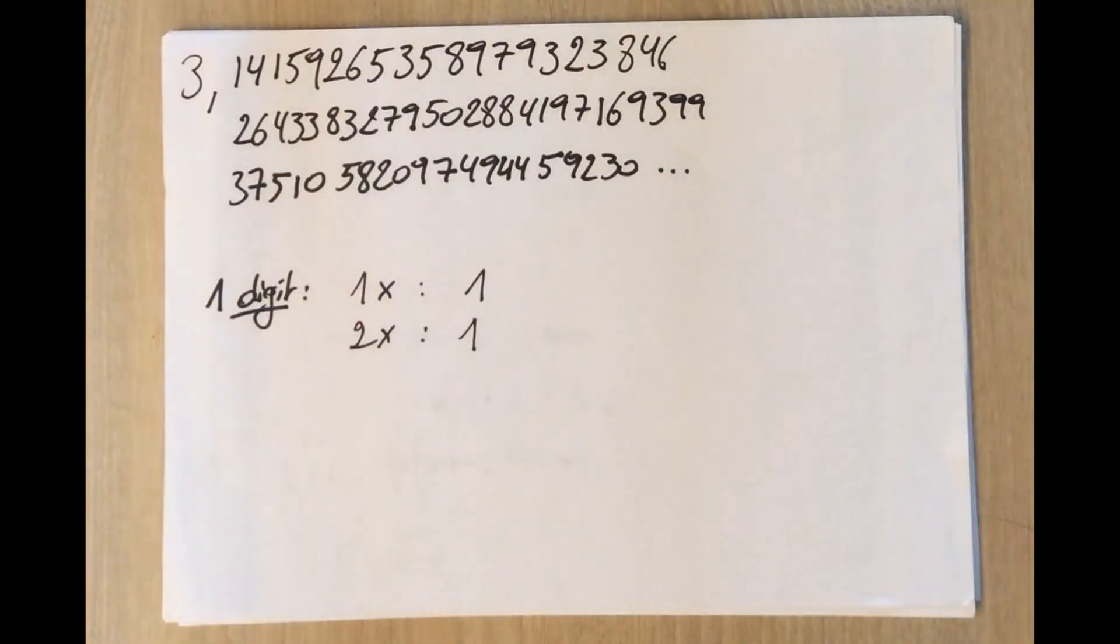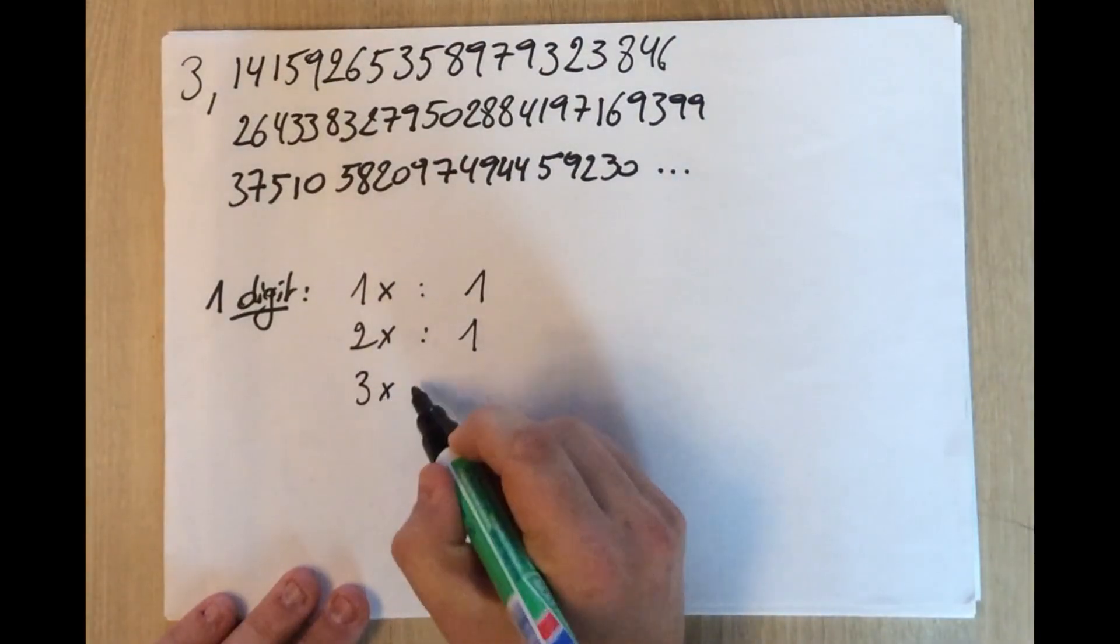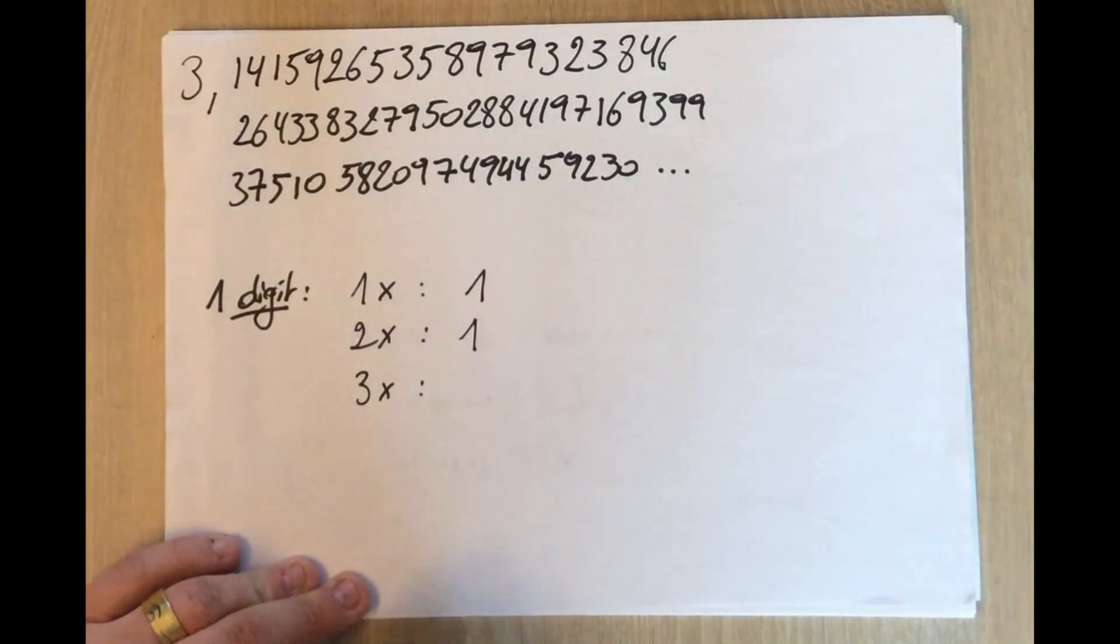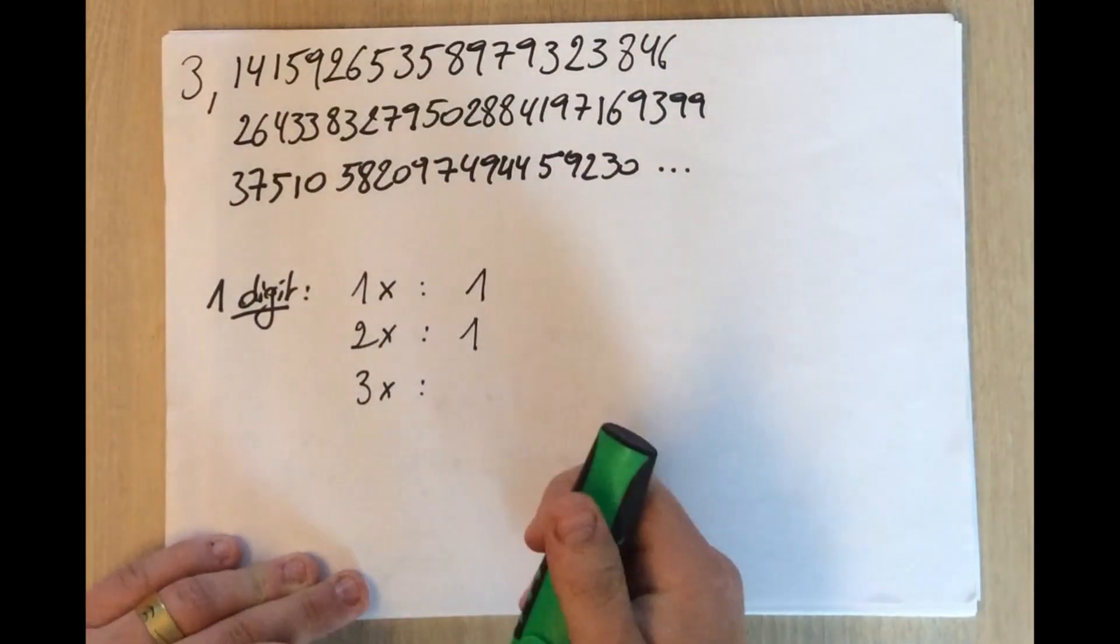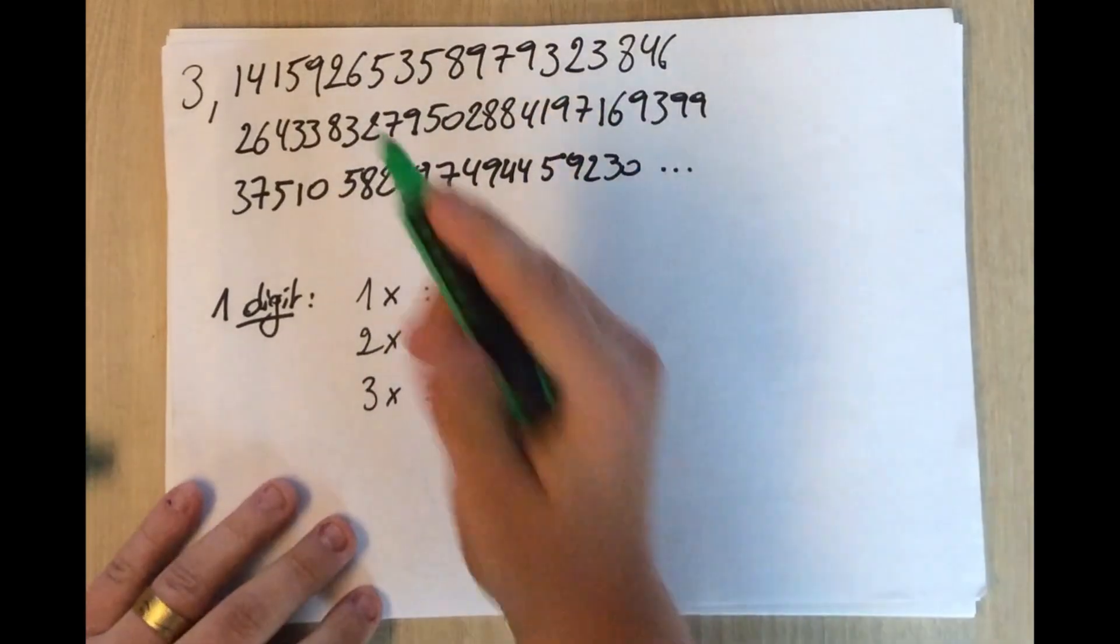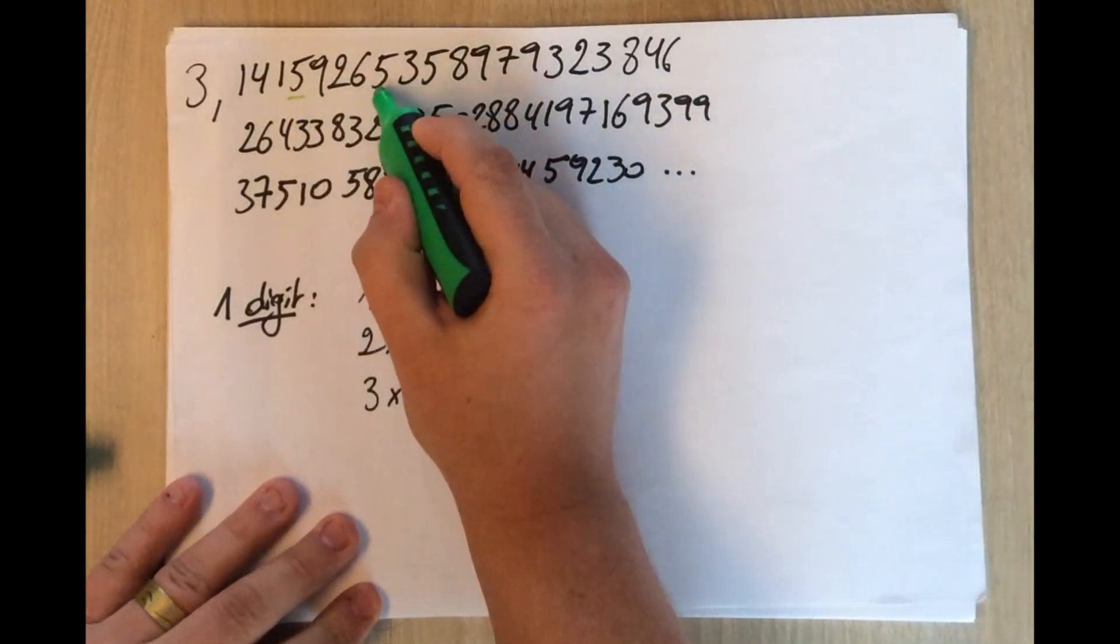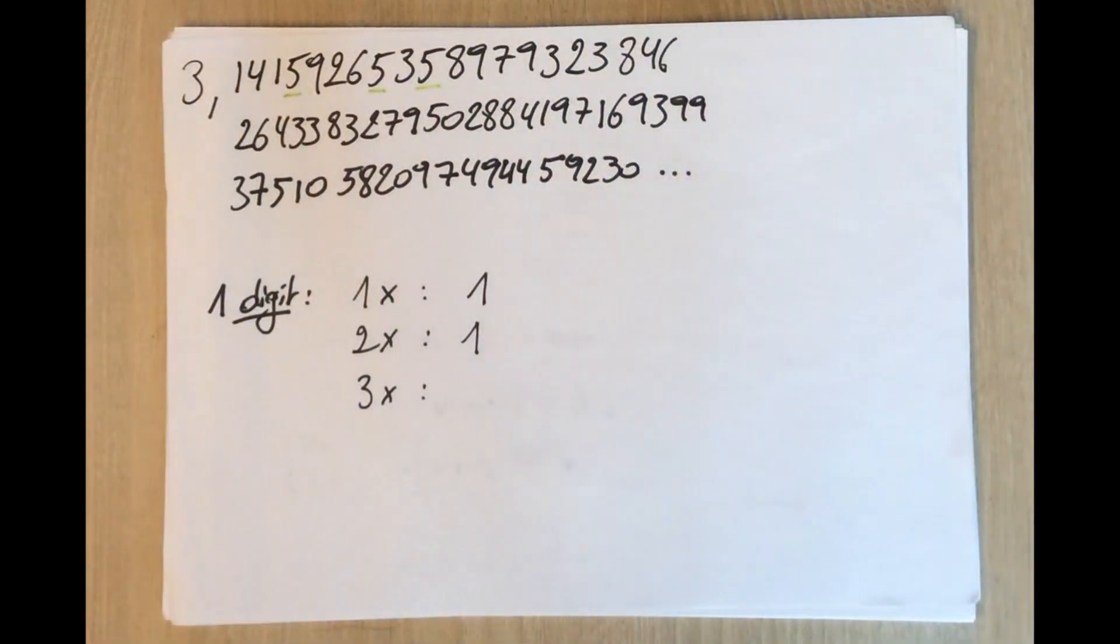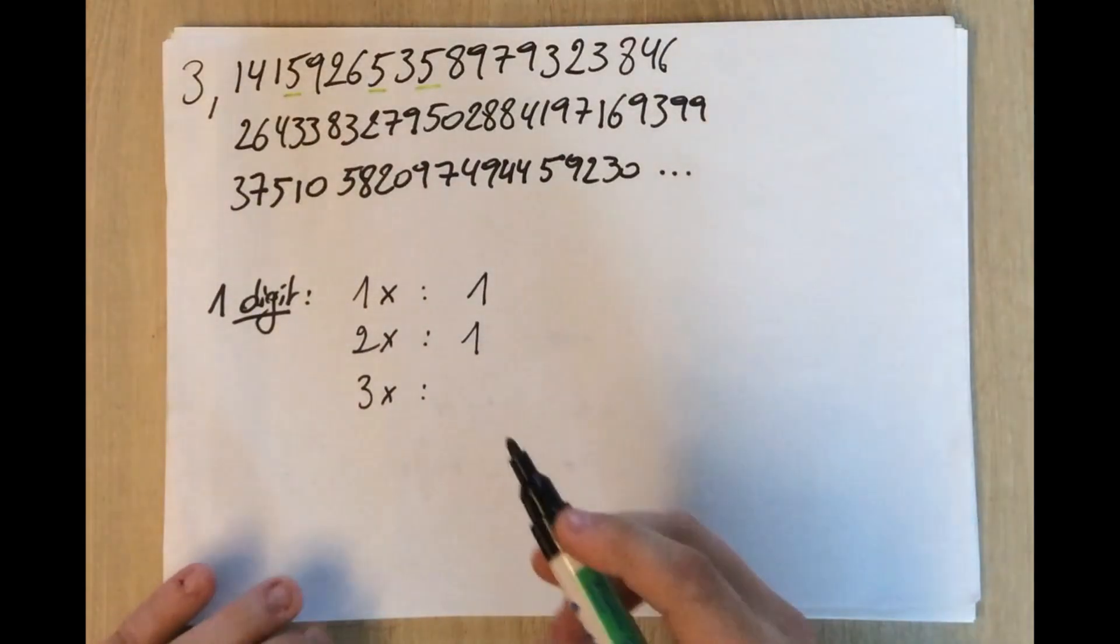But then it changes. It changes because if we were looking for three appearances, we see the following. We have a five over here, a five over here, and a five over here. In the first ten digits of pi, the number five is appearing three times. And that's the first one to appear three times.